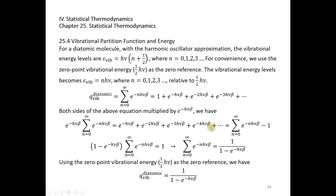If you examine the result, the right-hand side is simply the original sum minus 1. The second term here corresponds to the first term, the third to the second, etc. So we get the equation: e to the power of negative h nu beta times q equals q minus 1, where both the left and right series are recognized as q.